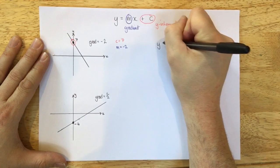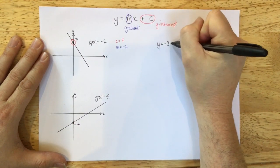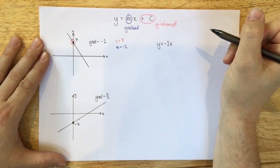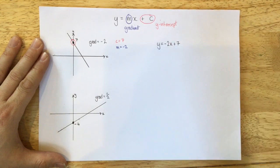So if we put that into y equals mx plus c, instead of m we've got minus 2. So instead of mx, we have minus 2x. And instead of plus c, we have plus 7. And so we have the equation of that line.